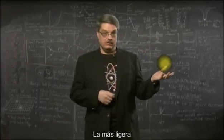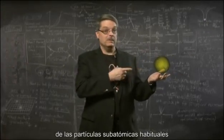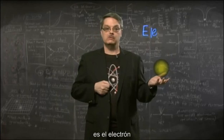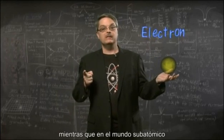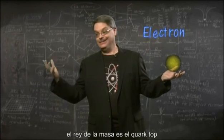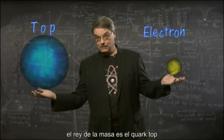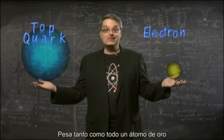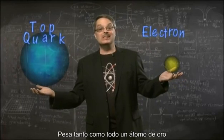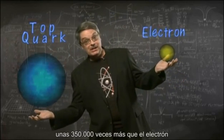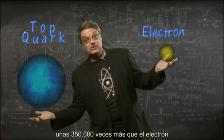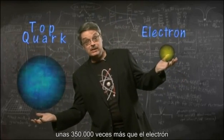The lightest of the familiar subatomic particles is the electron, while in the subatomic world, the king of mass is the top quark. It weighs about as much as an entire atom of gold — about 350,000 times more than the electron.